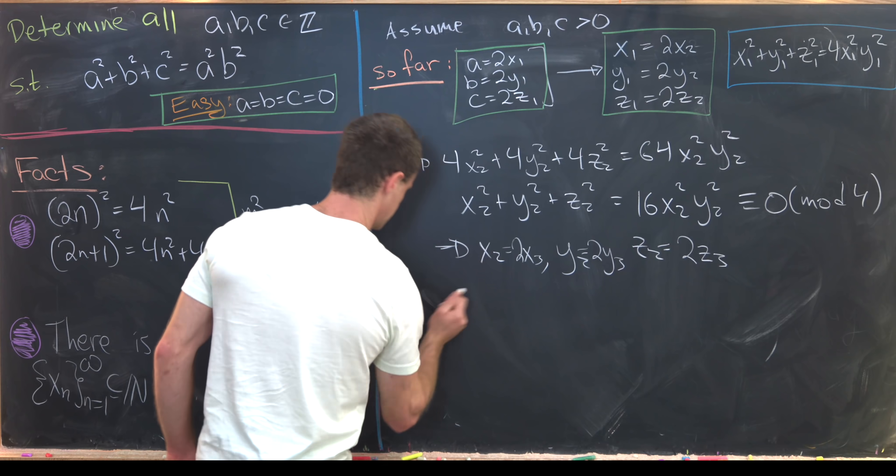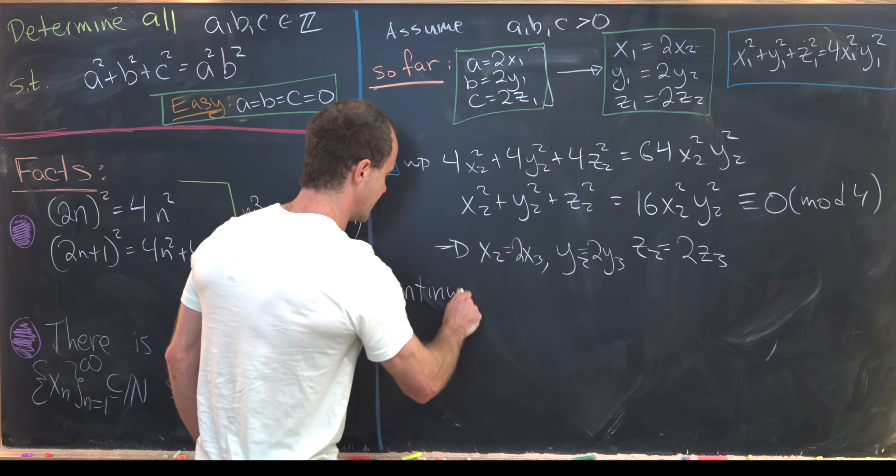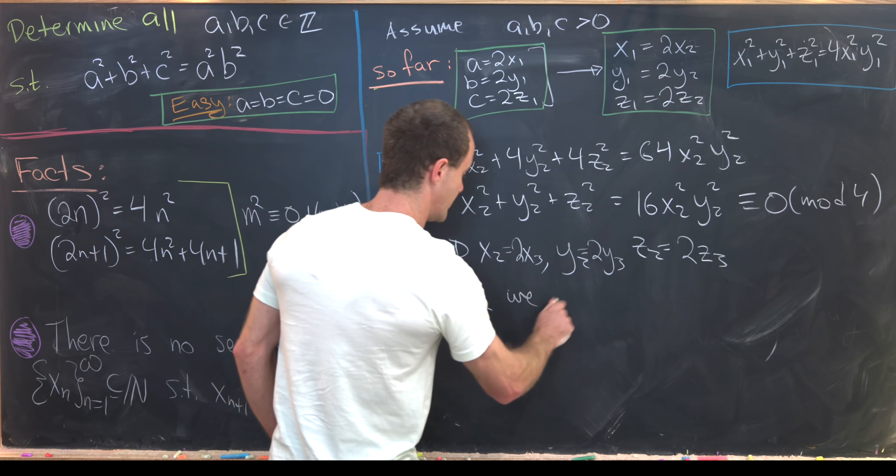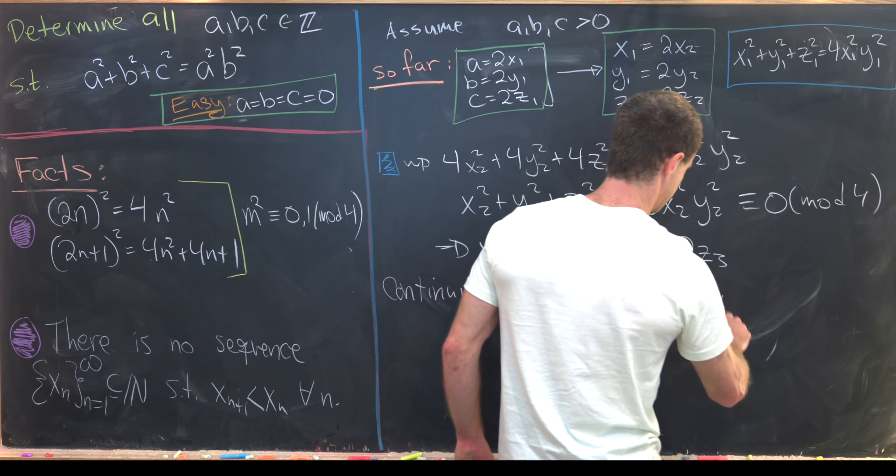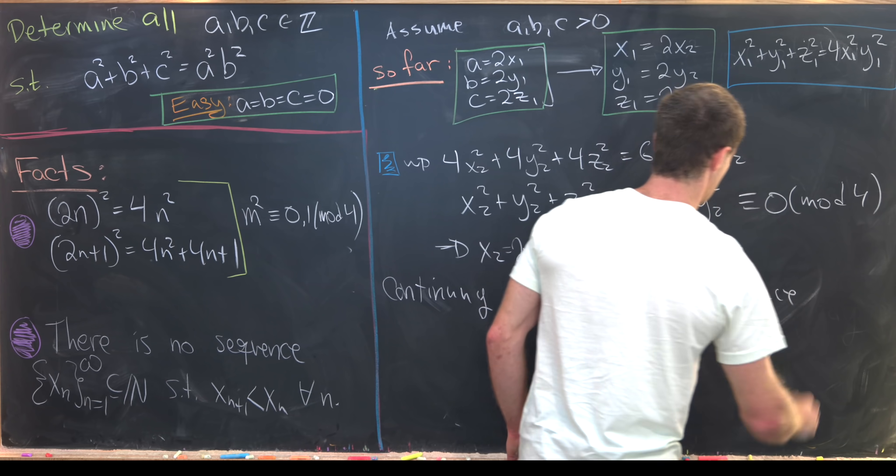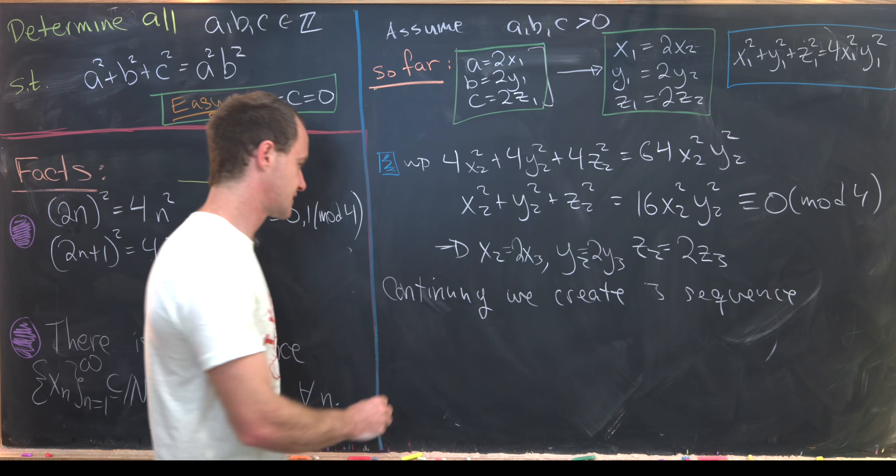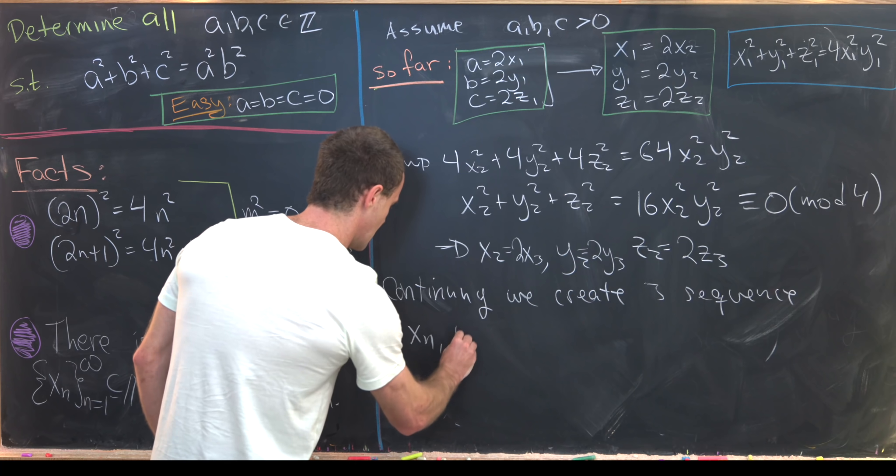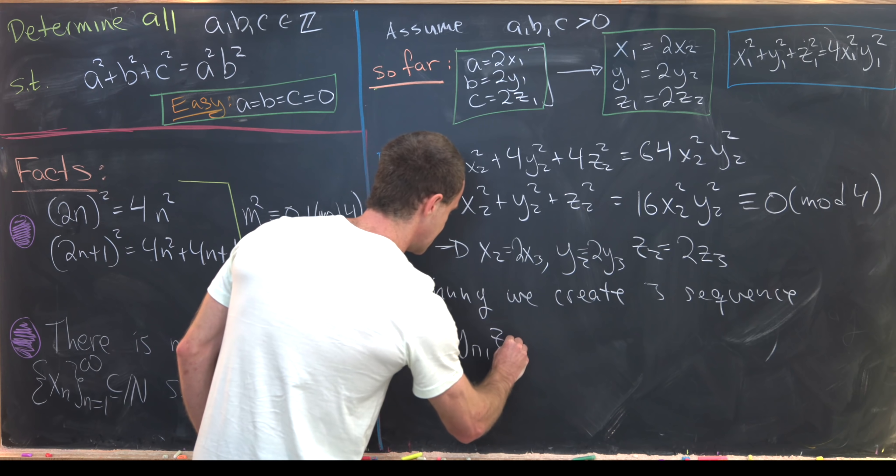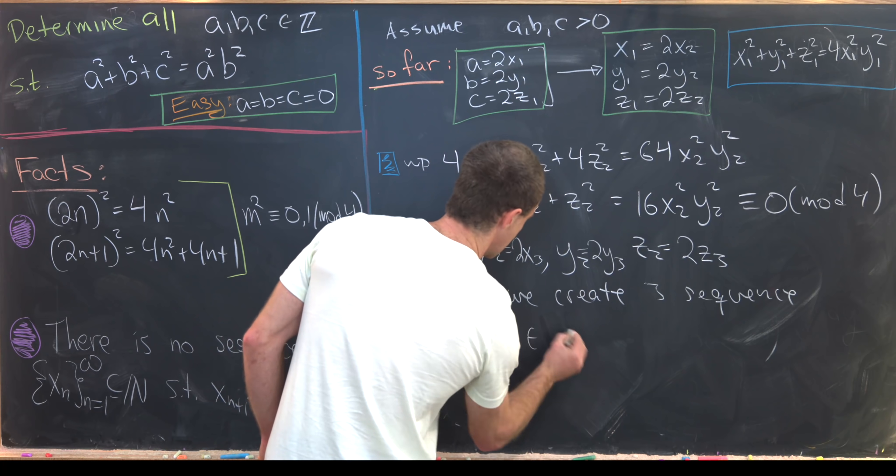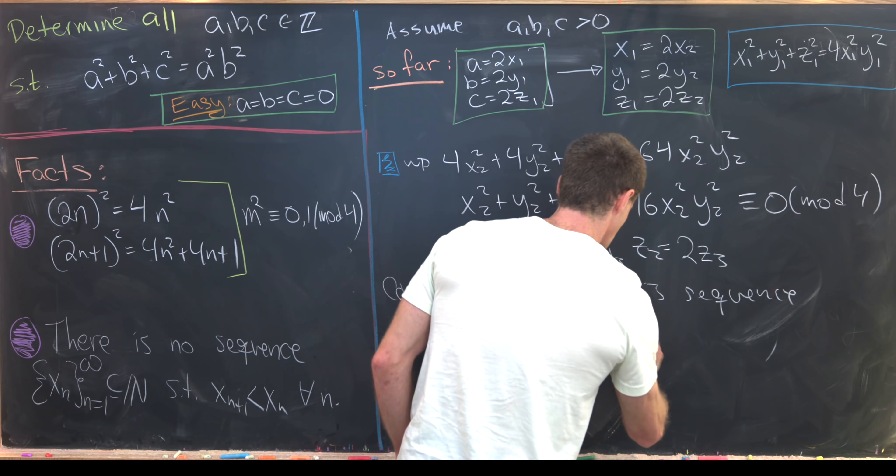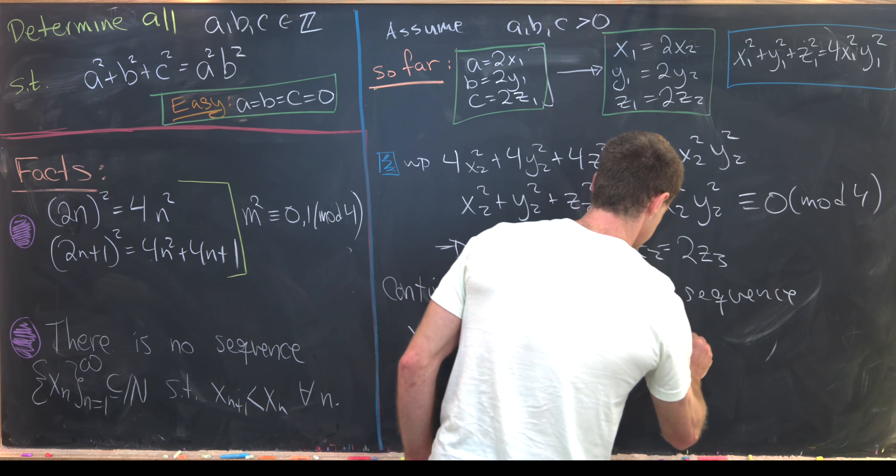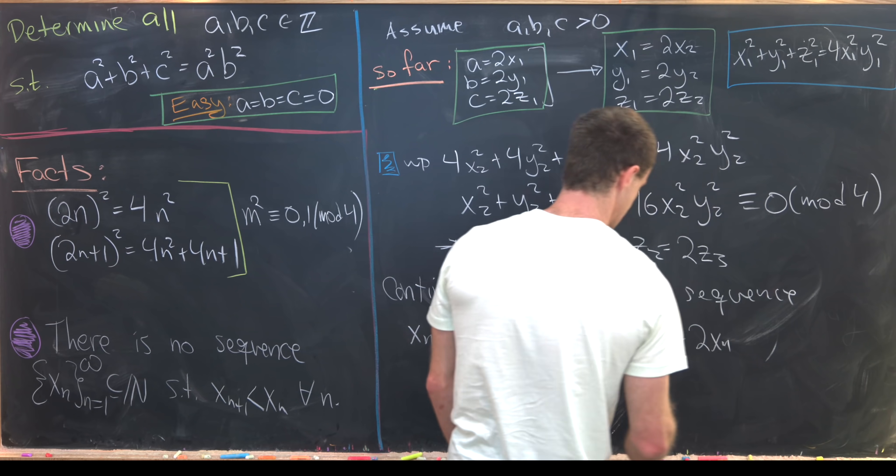We'll call them xₙ, yₙ, zₙ. They're all in natural numbers, and they satisfy the following rules, where xₙ₊₁ = 2xₙ...